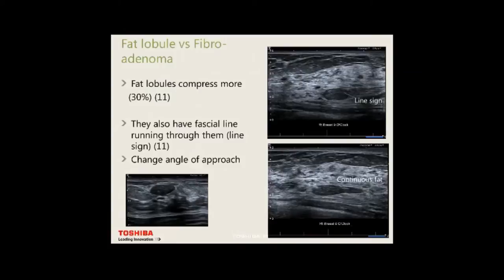When differentiating fat lobules from fibroadenomas: fat lobules compress more and have a fascial line sign running through them. With a follow-up fibroadenoma case, coming from the side and a different approach, then rotating, you can see continuous fat — unlike a fibroadenoma, which remains complete as you rotate.